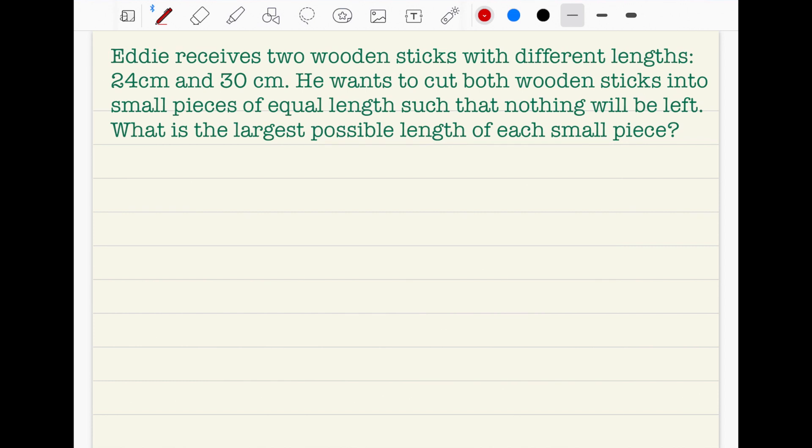HCF - highest common factor. And LCM - lowest common multiple. We only need HCF because it asks us what is the largest possible length of each small piece.